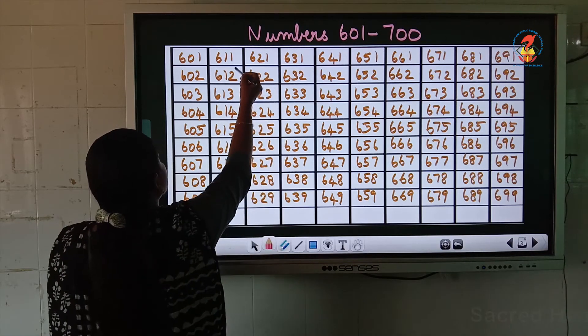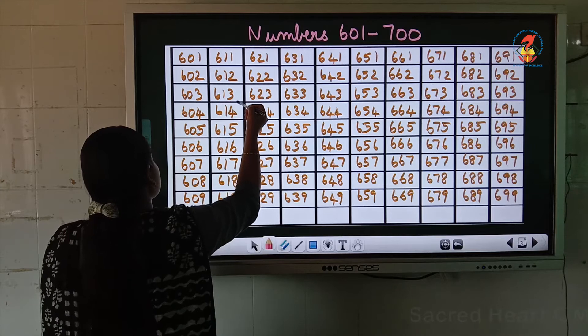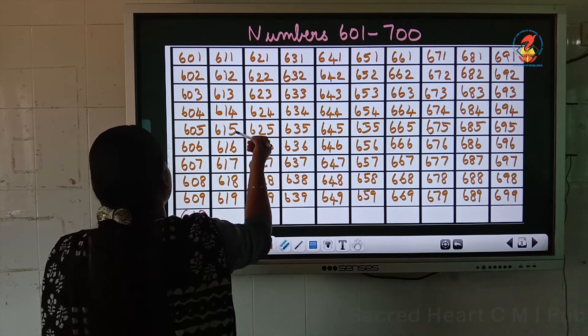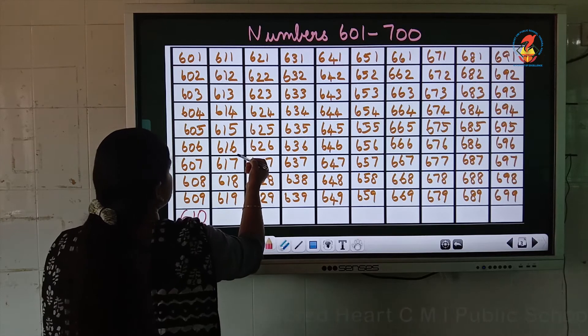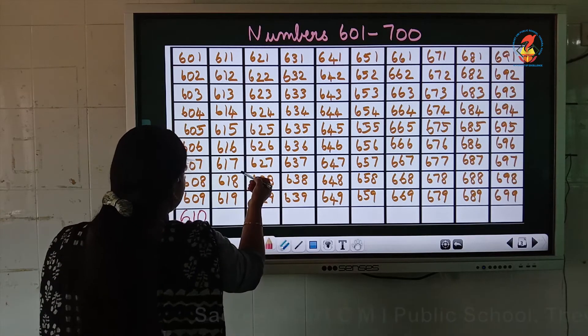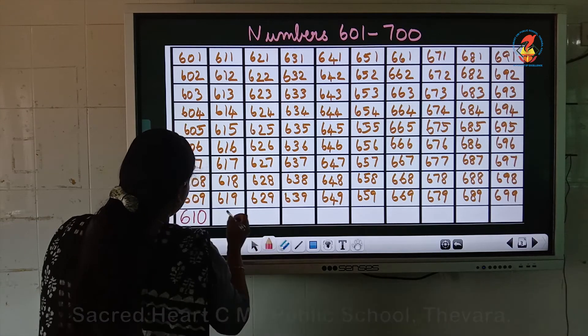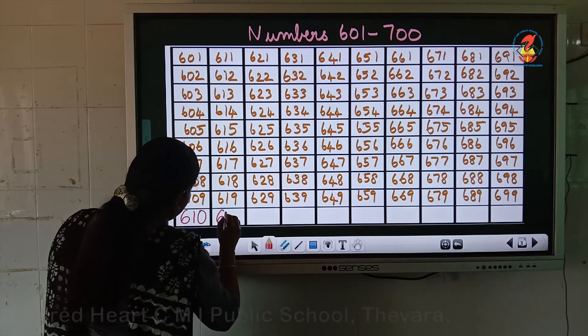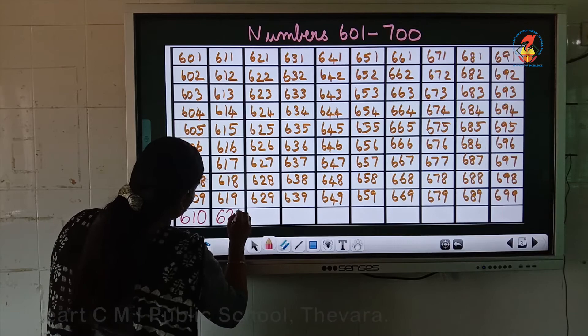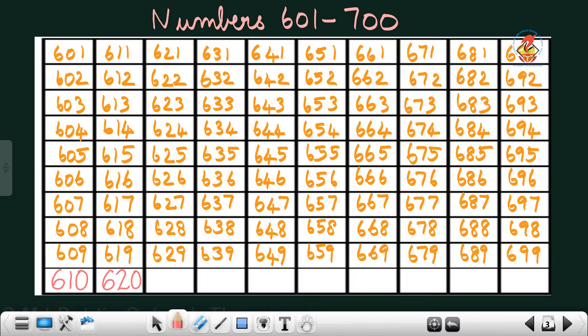Now, 611, 612, 613, 614, 615, 616, 617, 618, 619, next number is 620.